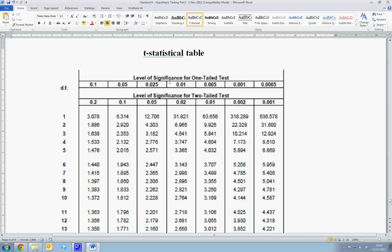We'll start by noting that two column headings are present: level of significance for a one-tail test and level of significance for a two-tail test.